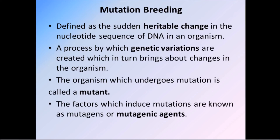A process by which genetic variations are created, which in turn brings about changes in the organism, is called mutation breeding. The organism which undergoes mutation is called a mutant. The factors which induce mutations are known as mutagens or mutagenic agents. Mutagens are of two types: physical mutagens and chemical mutagens. Physical mutagens are radiations like X-rays, alpha, beta and gamma rays, UV rays, and temperature, which induce mutations.